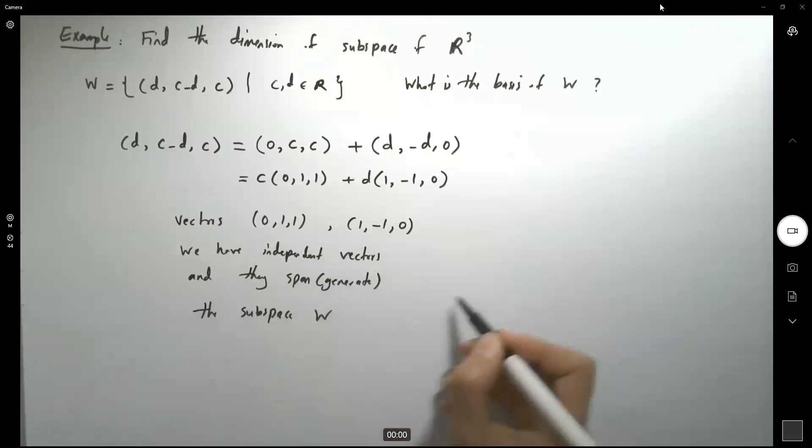So you're going to say that the dimension of W is 2.